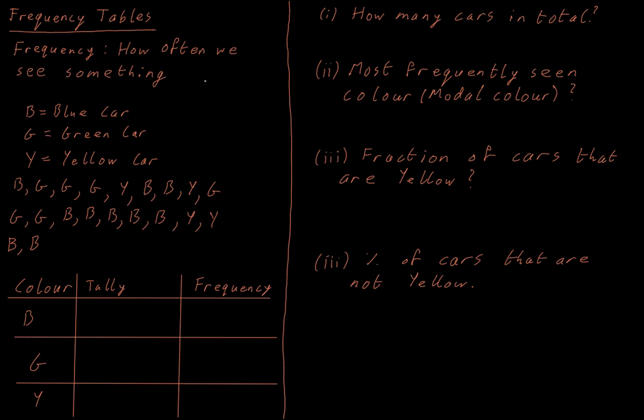In science, we might come across it as the frequency of sound, and that means how often a peak or a trough would pass us per second. So we're always counting how often we see something when we're talking about frequency. Or if we met someone a lot, we would say we met them frequently. So we're still talking about how often we see someone.